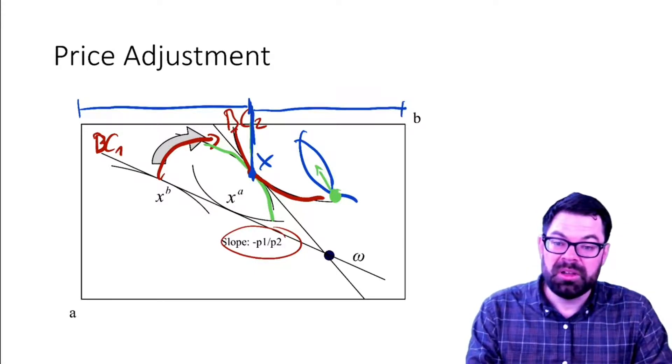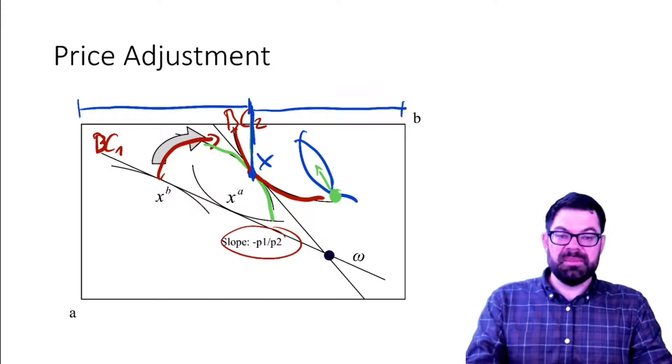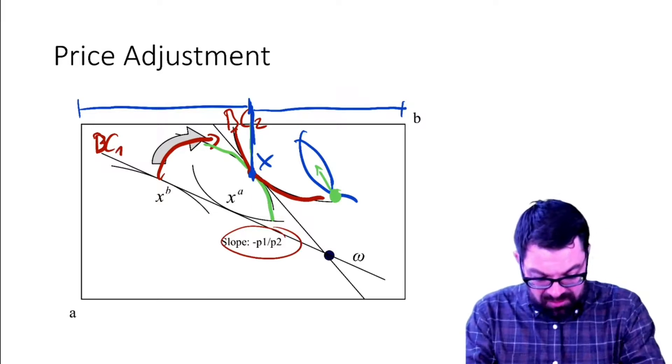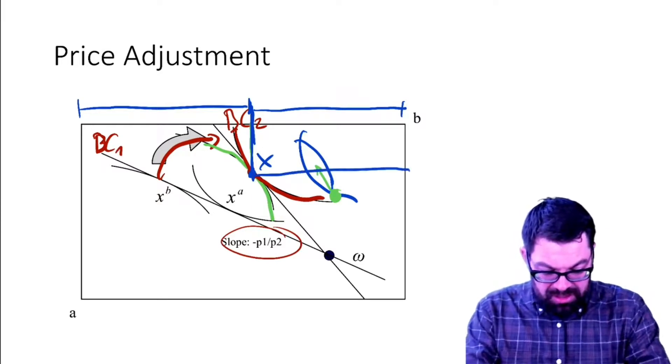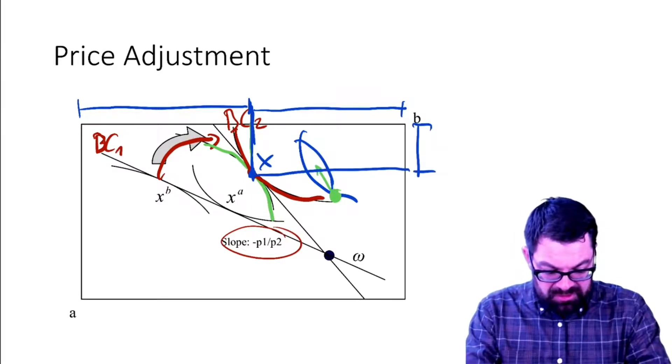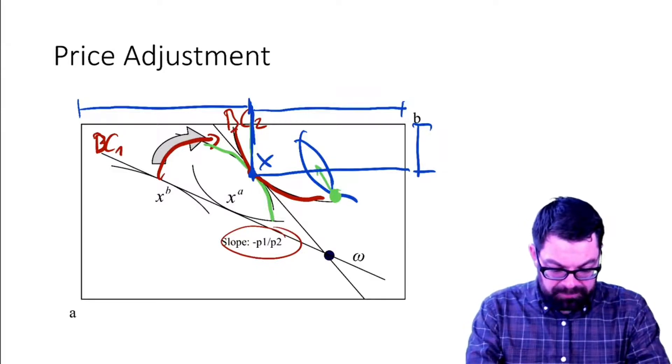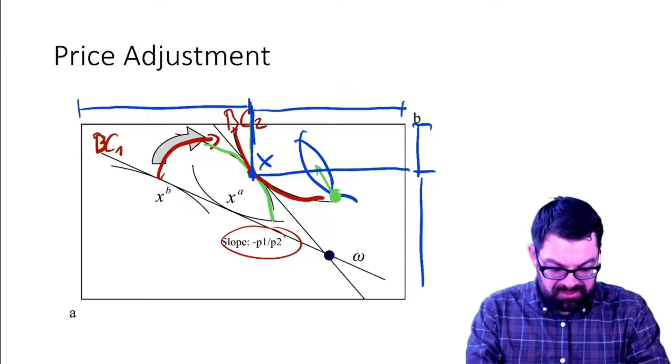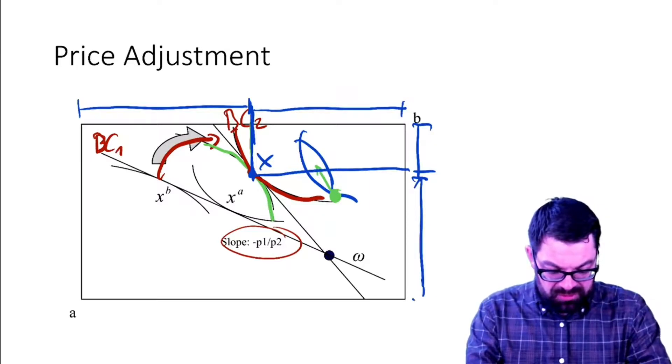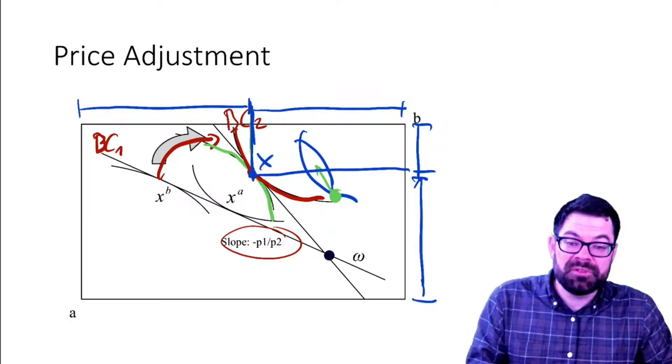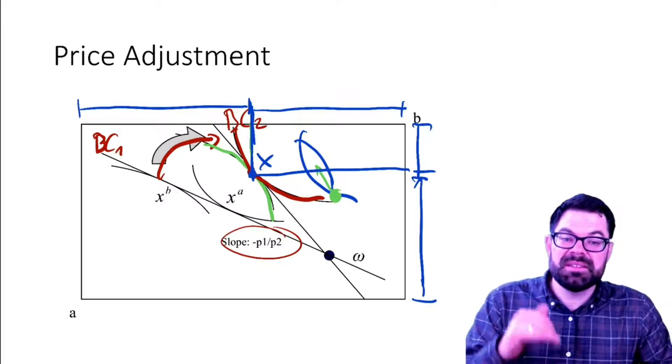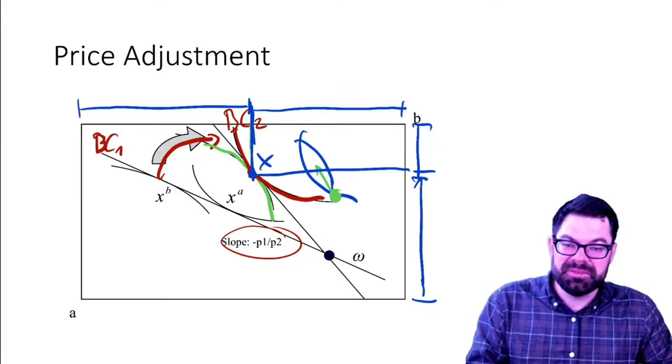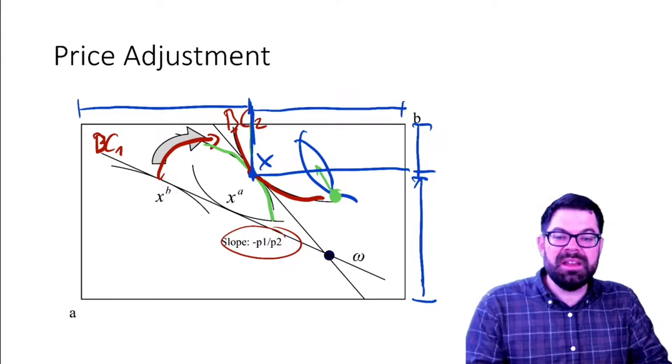And also you can see here that, let's look at good one. Good one is exactly split, not 50-50, but it's split between both people and there is no excess demand or supply. The same goes for good two. Betty gets that much of good two, Andrew gets that much of good two. It's not split 50-50, doesn't have to be, but there is no excess supply or demand and so both markets are simultaneously in equilibrium.